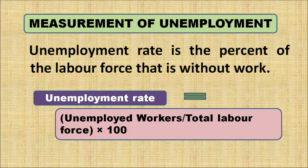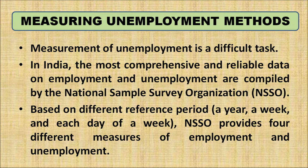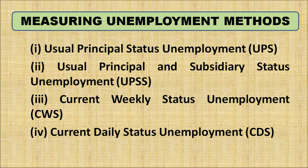The unemployment rate is the percentage of the labour force that is without work: unemployed workers divided by total labour force, multiplied by 100. If 10 out of 100 people are not getting jobs, the unemployment rate is 10%. Measurement of unemployment is a difficult task in a country like India. The most comprehensive and reliable data are compiled by the National Sample Survey Organisation (NSSO), which, based on different reference periods, provides four measures: usual principal status, usual principal and subsidiary status, current weekly status, and current daily status unemployment.